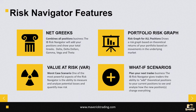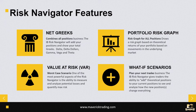The Risk Navigator takes all of your positions and gives you data. Here are some highlights of what it gives you. It provides net Greeks — combining all your positions and telling you how much delta you have, how much vega, how much theta. This can be very helpful to make sure you are in the right positions.